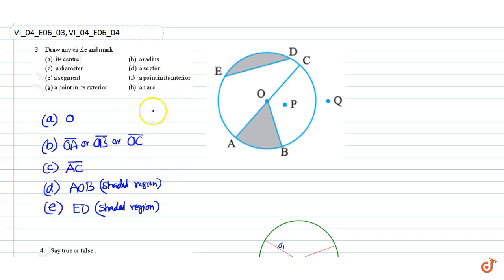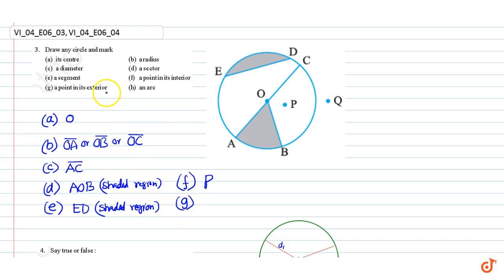Part F: a point in its interior. We know that point P lies inside the circle, therefore P is a point in its interior. Part G: a point in its exterior. Point Q lies outside the circle, therefore Q is in the exterior of the circle. Part H: an arc. AB is an arc of the circle.